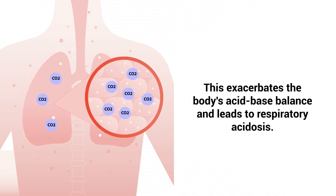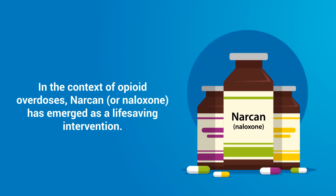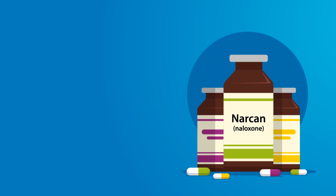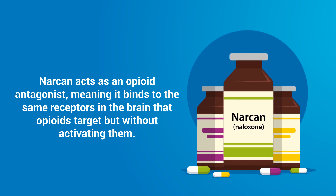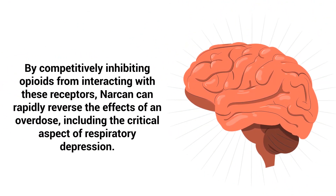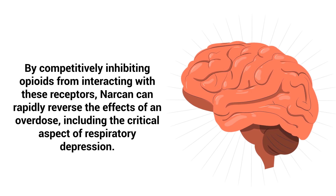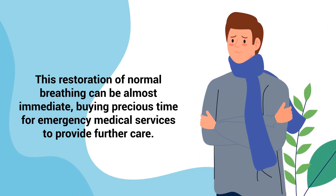In the context of opioid overdoses, Narcan, or naloxone, has emerged as a life-saving intervention. Narcan acts as an opioid antagonist, meaning it binds to the same receptors in the brain that opioids target but without activating them. By completely inhibiting opioids from interacting with these receptors, Narcan can rapidly reverse the effects of an overdose, including the critical aspect of respiratory depression. This restoration of normal breathing can be almost immediate, buying precious time for emergency medical services to provide further care.